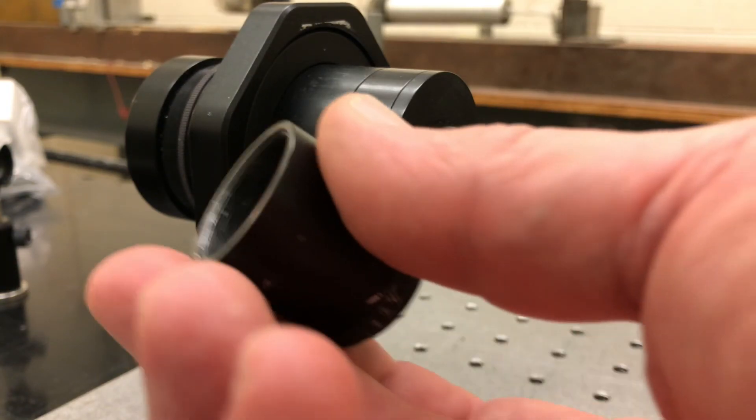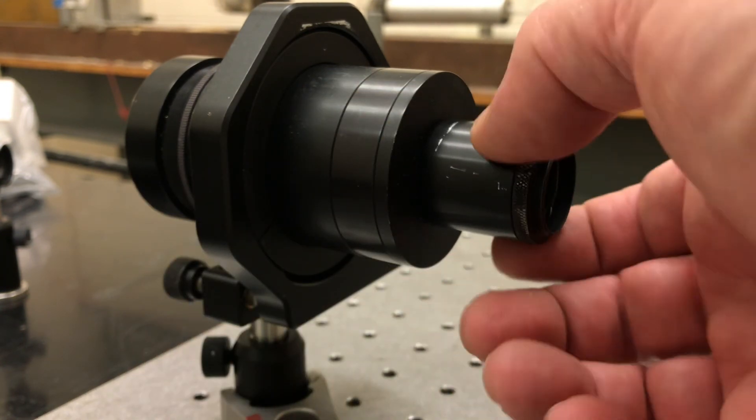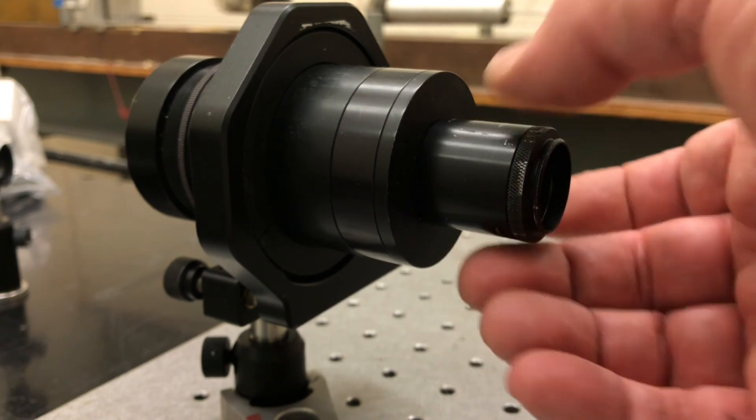So now's the time when I can take the negative lens and screw that into the holder as well. So now I'm going to align it separately, and I'm hoping I'll only need to make small changes. And what I can see is the beam goes back almost perfectly on the hole.